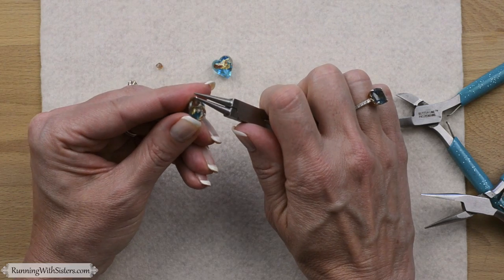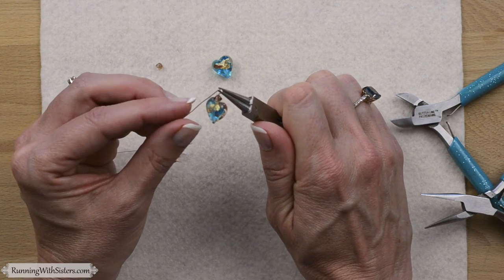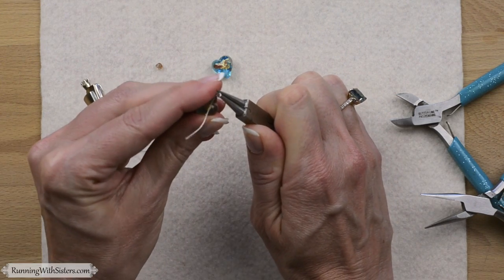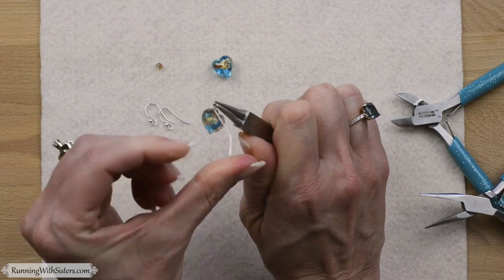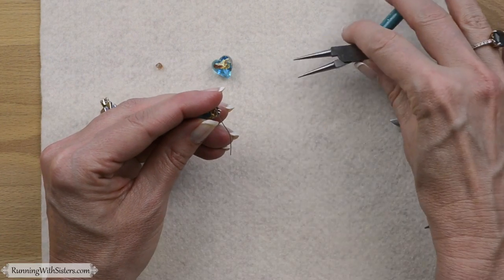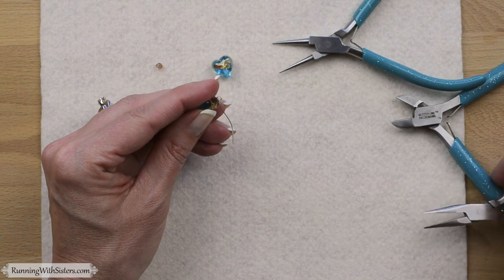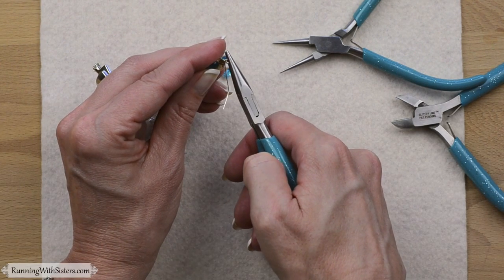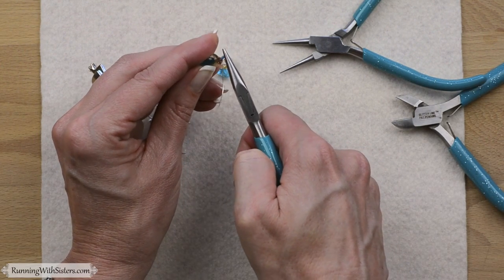Now I'm repositioning the pliers so that my bottom jaw is now in the loop, and I'm going to finish pulling the wire around to make it a nice round circle. That looks good. Then I'm going to switch pliers. I'm going to grab my chain nose pliers and grab that loop flat to keep that shape perfect.